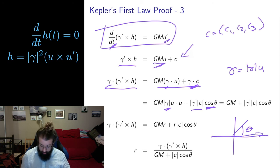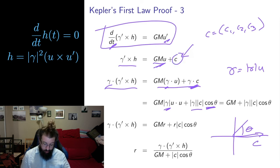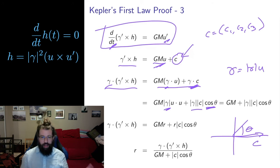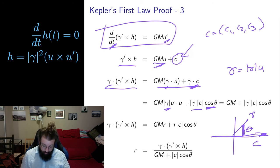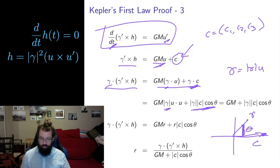I haven't chosen where my axes are yet, so I'm going to choose c to be a vector in the x-direction. Why? C relates to the starting information about my satellite — how far away it starts and what velocity it has. Since I haven't chosen how my axes are oriented, I can say let it start on the x-axis. No matter where it's starting, I can draw my axes such that the angle from c to gamma is the ordinary angle of polar coordinates.